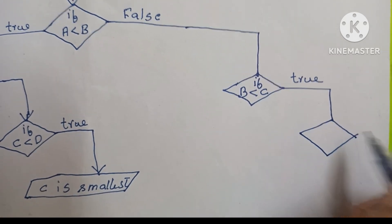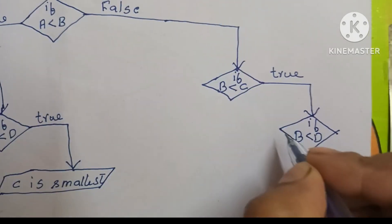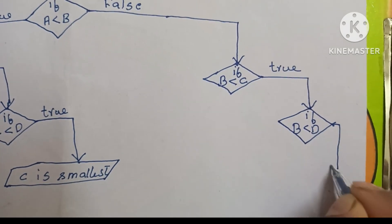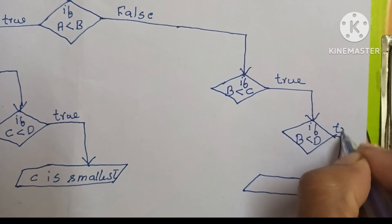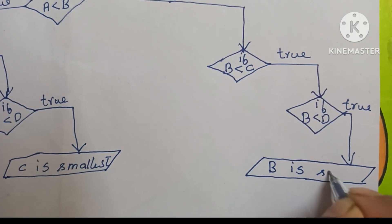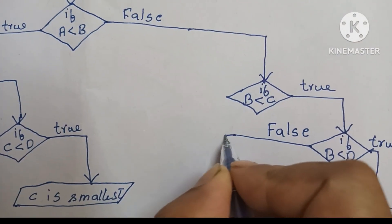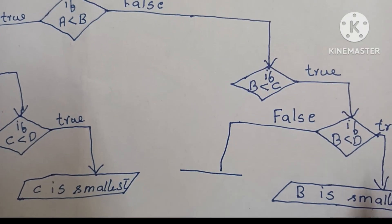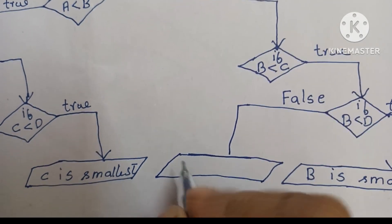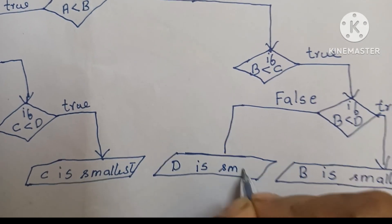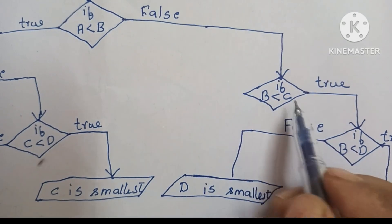If B less than C is true, we compare B with D. If B less than D and this condition is true, we have to print B is smallest. If B less than D is false, we have to print D is smallest.